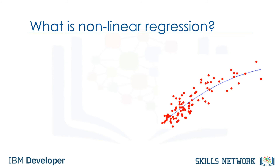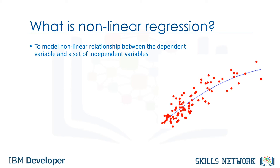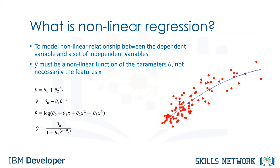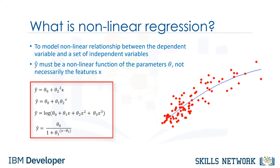So, what is non-linear regression exactly? First, non-linear regression is a method to model a non-linear relationship between the dependent variable and a set of independent variables. Second, for a model to be considered non-linear, y-hat must be a non-linear function of the parameters theta, not necessarily the features x. When it comes to non-linear equations, they can take the shape of exponential, logarithmic, and logistic, or many other types. The change of y-hat depends on changes in the parameters theta, not necessarily on x only. That is, in non-linear regression, a model is non-linear by parameters.